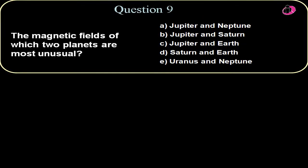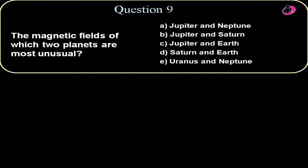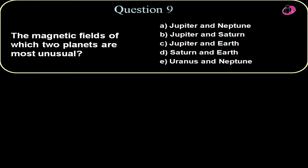Question nine. The magnetic fields of which two planets are most unusual? Well, Voyager 2 measured the magnetic fields of the Jovian planets. Jupiter and Saturn were, as expected, the magnetic fields were along the axis of rotation of the planets, hence confirming what would be called the dynamo effect. If you had metallic material on the interior of those planets swirling around, it would produce a magnetic field emanating very close to the axis of rotation of the planets.